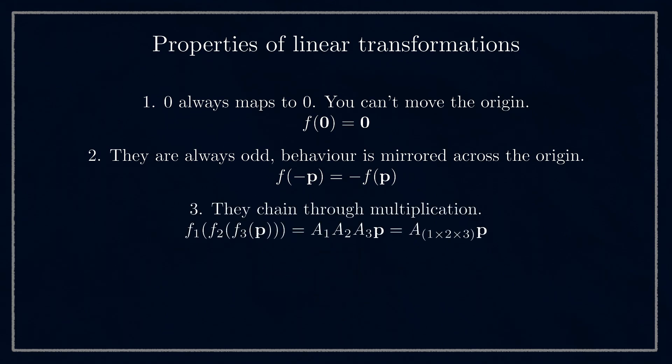Thirdly, linear transformations chain through multiplication. If we want to scale some points and then shear them and then rotate them, we can just multiply all the matrices together. Now this last point is extremely helpful. It doesn't just make the equations simpler on page, it also improves computation speed. Because we can pre-multiply all of the different matrices and then transform as many different points as we need to with one single final matrix multiplication.